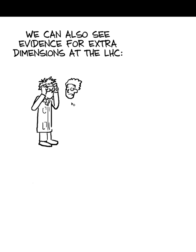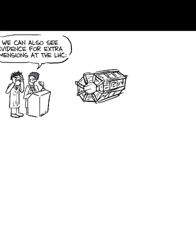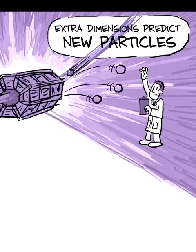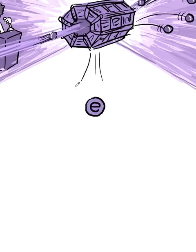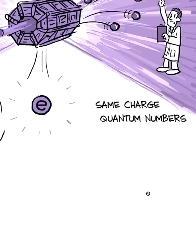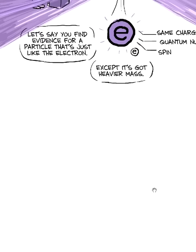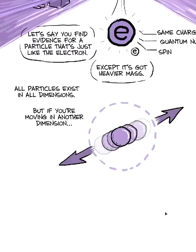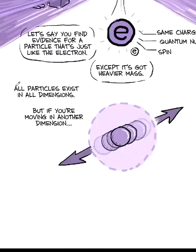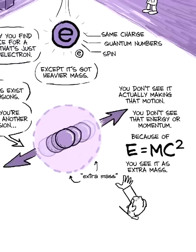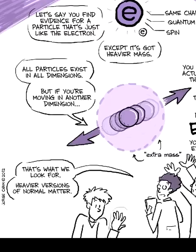But there was more, right? We can also see evidence for extra dimensions at the LHC. Bottom line is extra dimensions predict new particles. It would be like you turn on the collider and you analyze the data, and after some very laborious analysis, you find that there's evidence for a particle that's just like the electron. It's got the same charge, the same other quantum numbers, the same spin. Everything's the same except it's got some heavier mass.